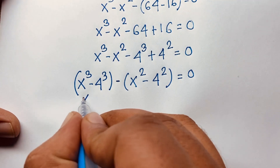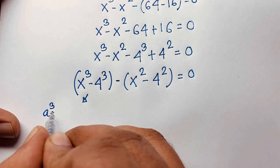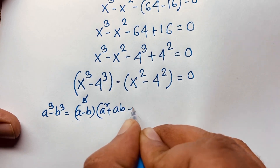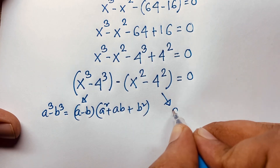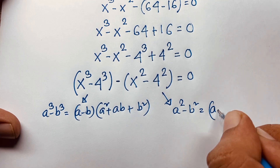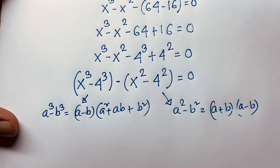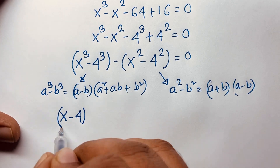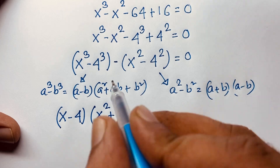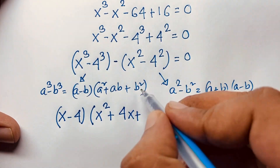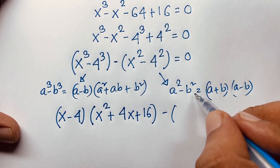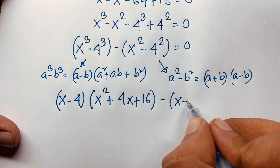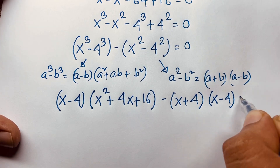Now, if I apply a cube minus b cube formula: a cube minus b cube equals a minus b times a squared plus ab plus b squared. And if I apply a squared minus b squared equals a plus b times a minus b. Applying these here: x to the power 3 minus 4 to the power 3 gives x minus 4 times x squared plus 4x plus 16, minus a squared minus b squared gives x plus 4 times x minus 4, is equal to 0.